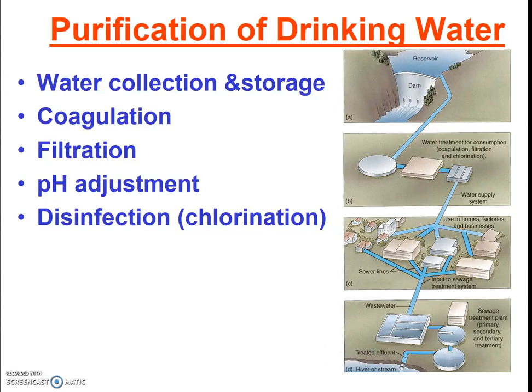So, in summary, water must be collected and stored; some water sources have to be coagulated and filtered; and all water needs to have a pH adjustment and disinfection. Then the last step is distribution through a series of pipes and water towers throughout your community. Part of your assignment this week will be to determine where and how the drinking water that comes into your home is treated.